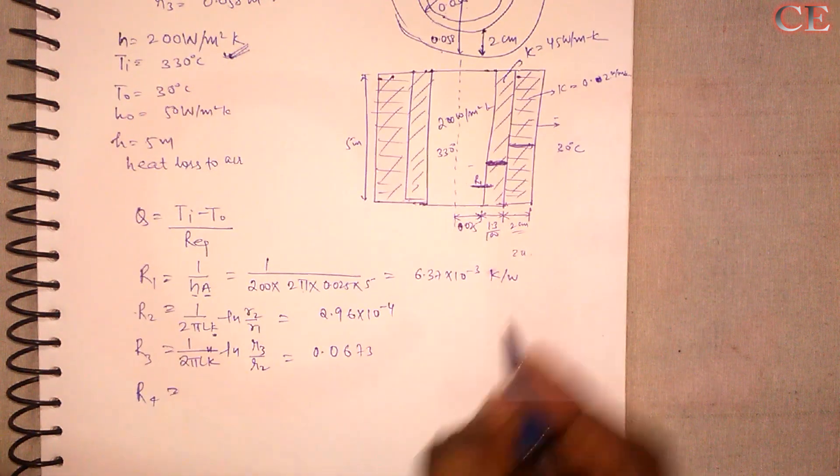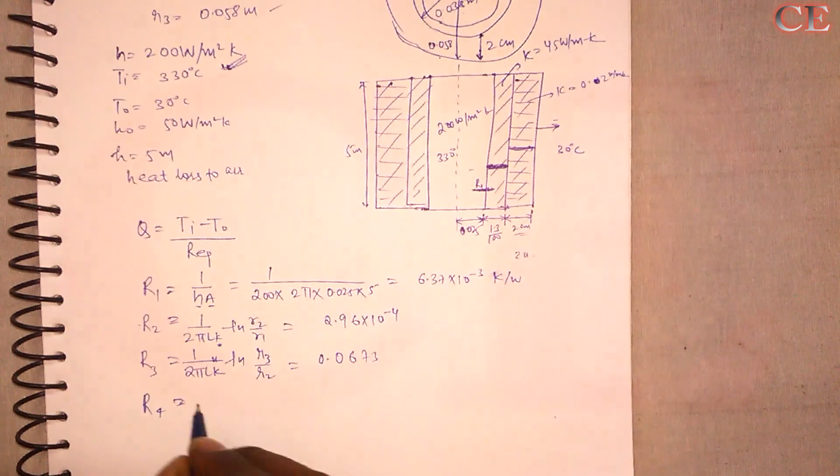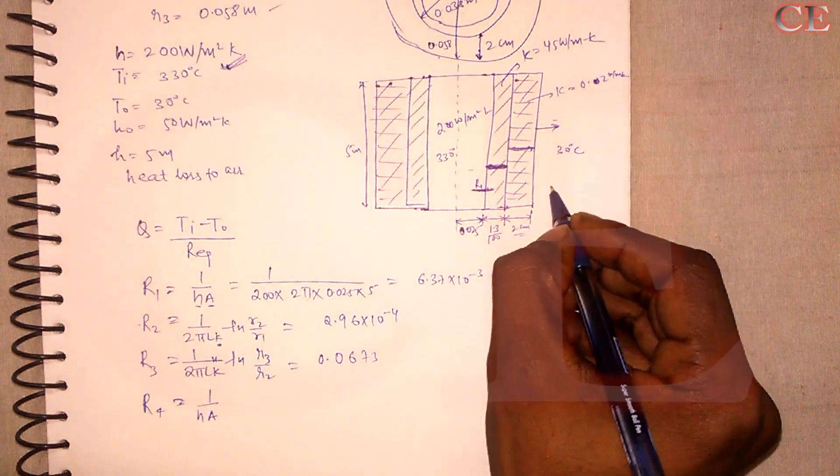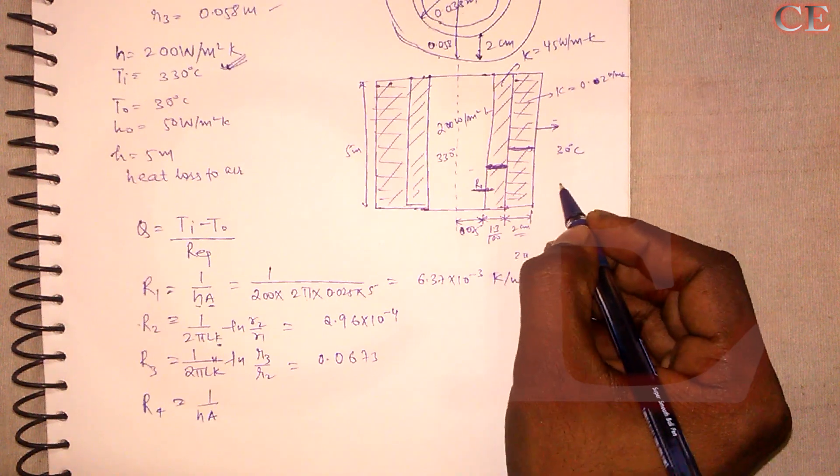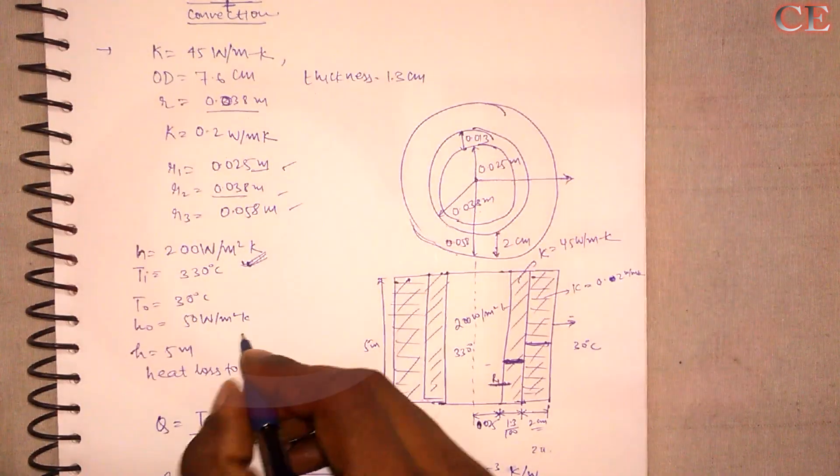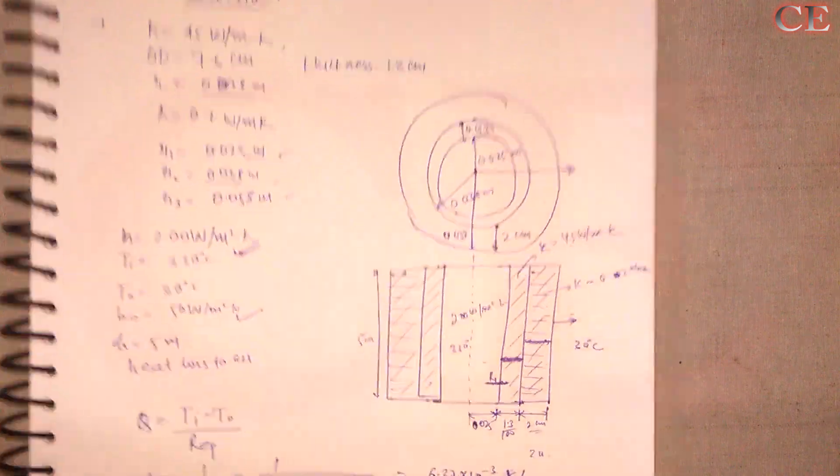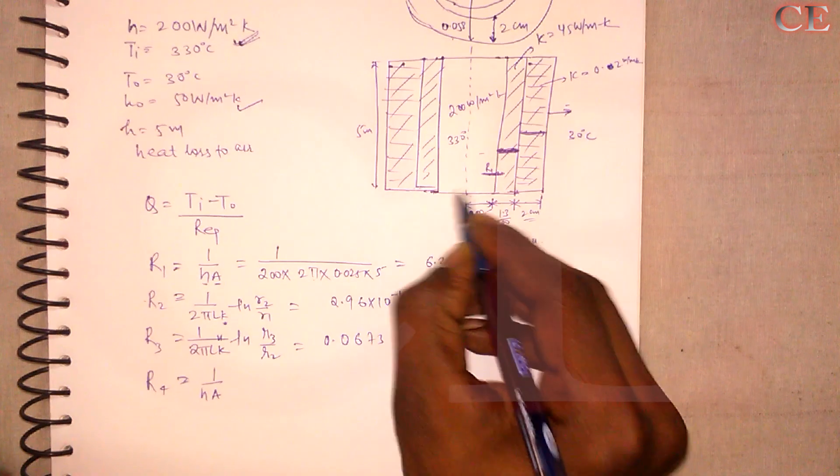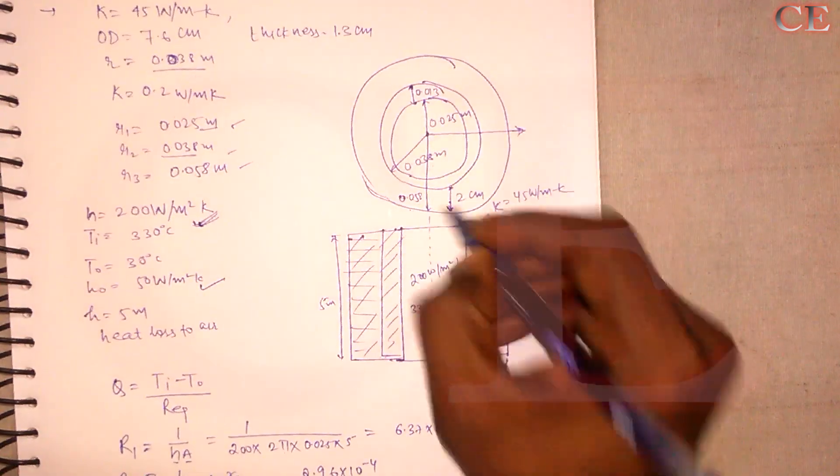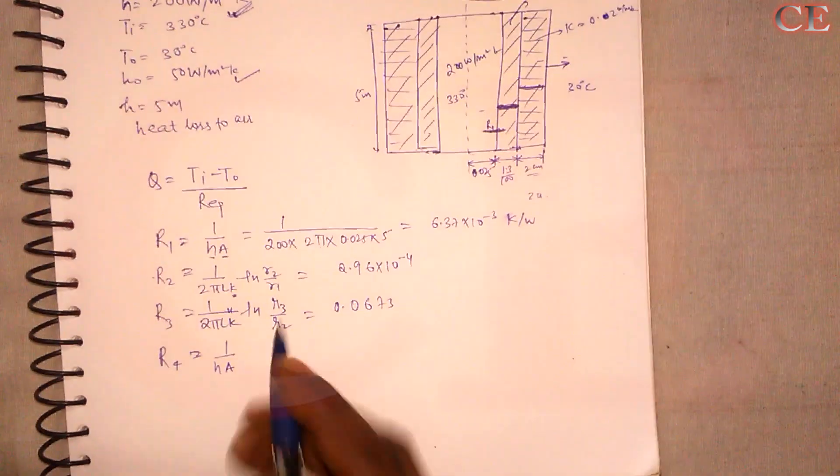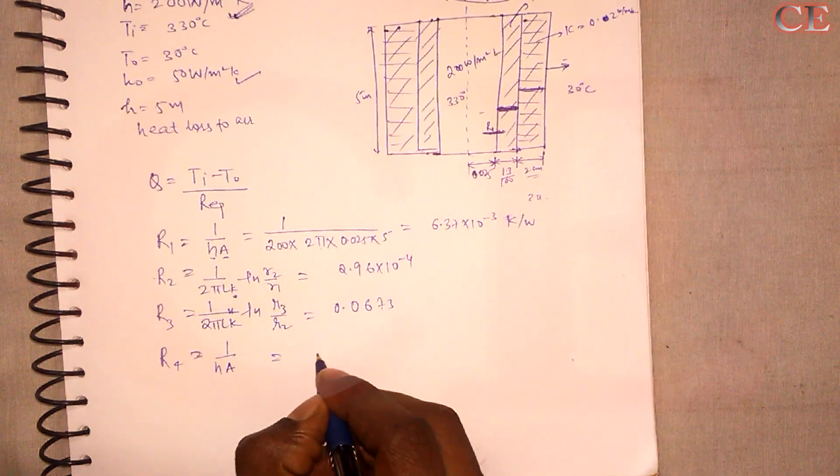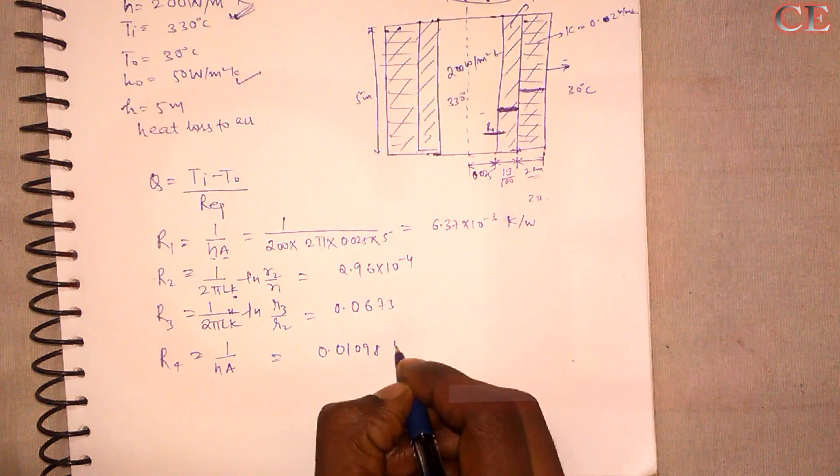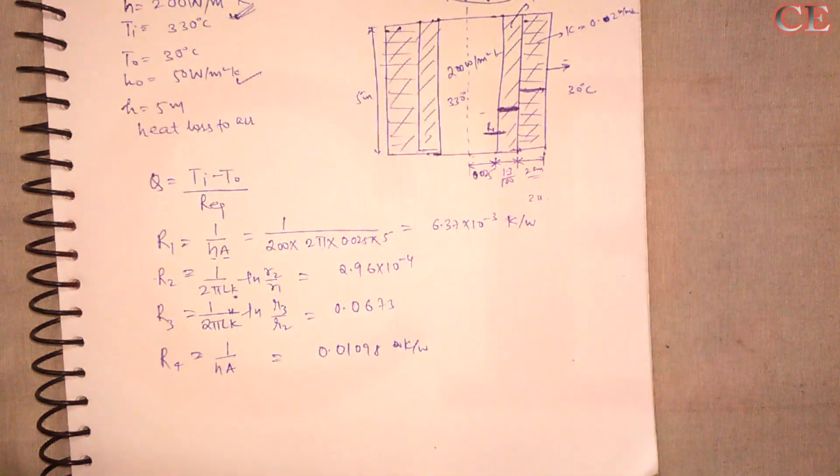Now R4. Here R4 is due to convection. So here again the formula 1 upon H. Here H which would be the H coefficient for the air. So it is 50 watt per meter square. And the area would be, the radius will be changed. The whole radius will be taken 0.058. So it would be equal to the value obtained is equal to 0.1098. Kelvin per watt.